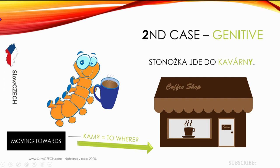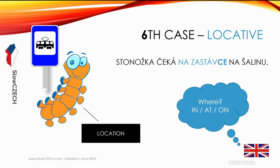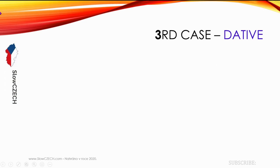Genitive can also show direction towards a place. 'Stonožka jde do kavárny' — 'do kavárny' tells us she is going towards or into the coffee shop. We can even switch the word order: 'Do kavárny jde stonožka' or 'Stonožka do kavárny jde.' The Locative, or sixth case: 'Stonožka čeká na zastávce na šalinu.' Locative shows location — where something is taking place. In English you'd use 'at' or 'on' with no case ending, whereas in Czech we change 'zastávka' to 'zastávce.'